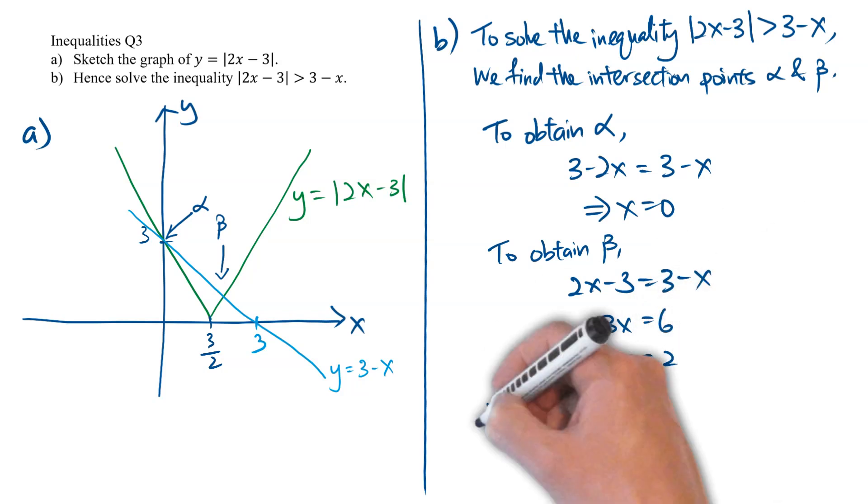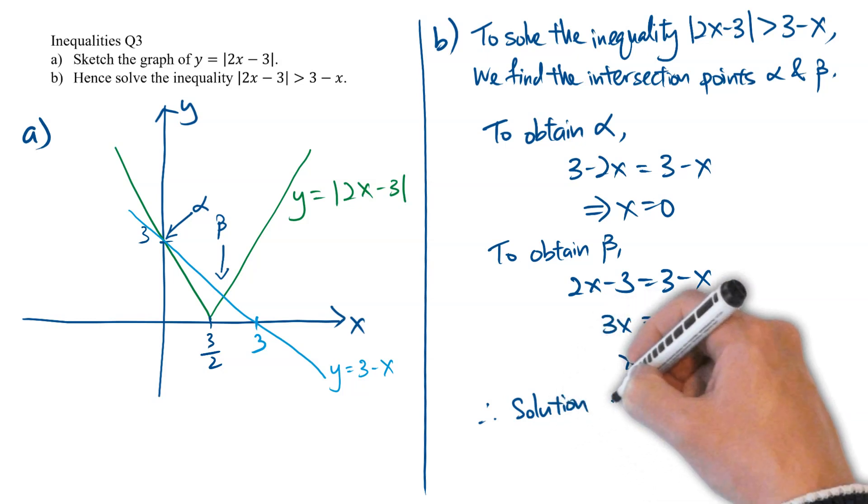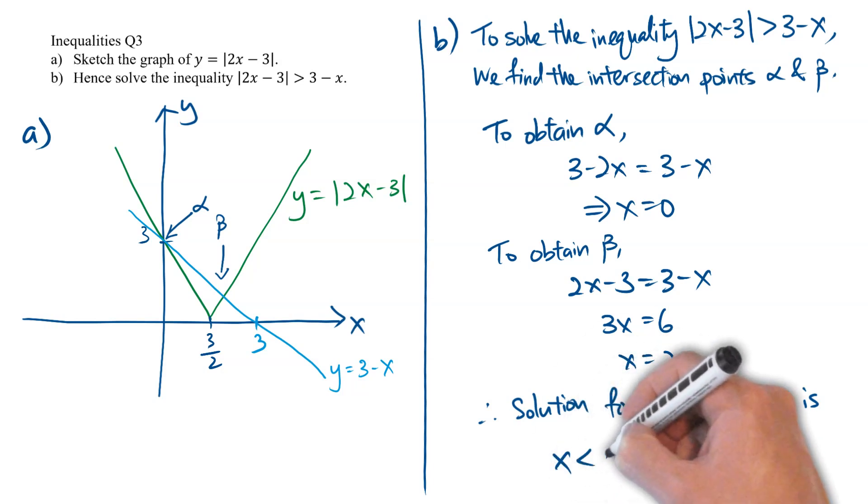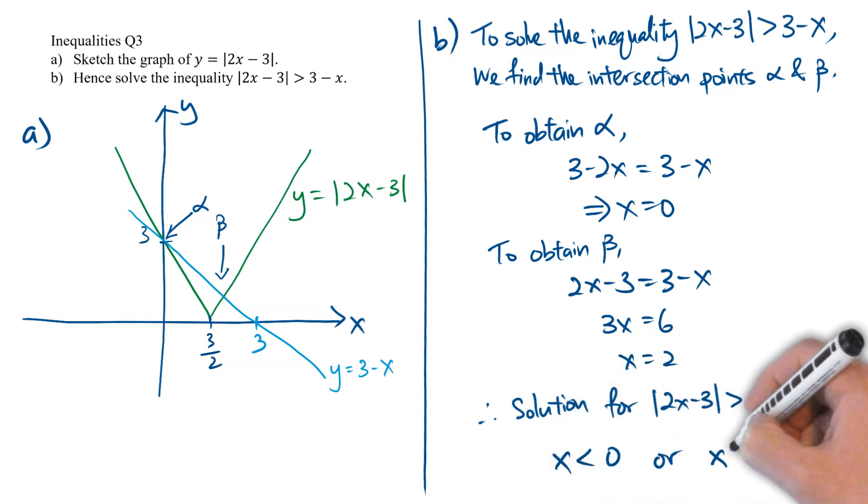Therefore, just by observing, we know that the solution for this inequality of modulus 2x minus 3 greater than 3 minus x must be x less than 0 or x greater than 2.